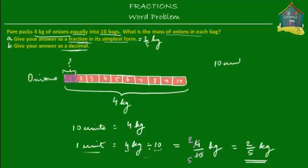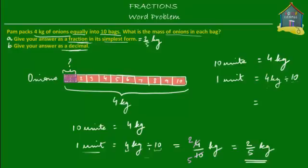We know that 10 units are equal to 4 kilograms, so the mass of 10 bags is 4 kilograms. Then the mass of one individual bag will be 4 kilograms divided by 10. Now if we write this 4 as a decimal number, this would be equal to 4.0 kilograms, and this 10 stays the same. So it's 4.0 kilograms divided by 10.